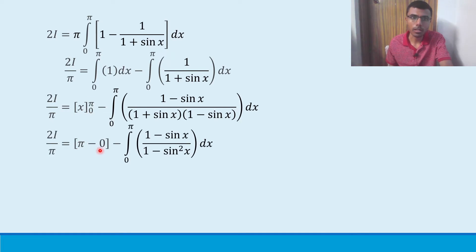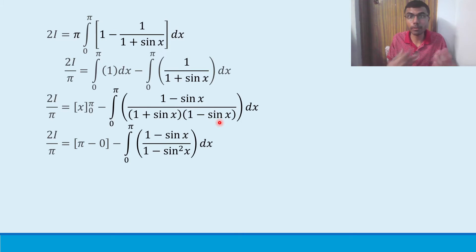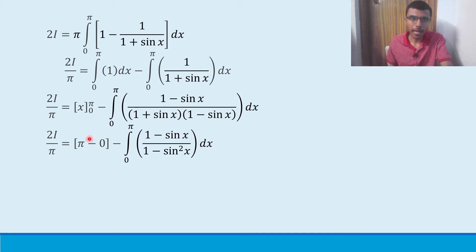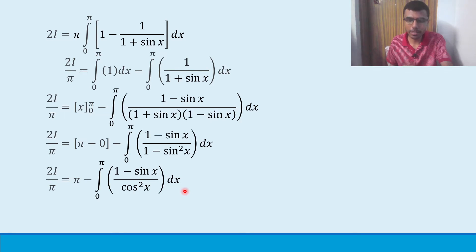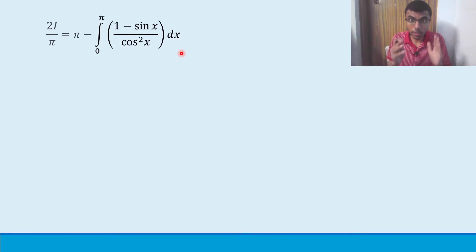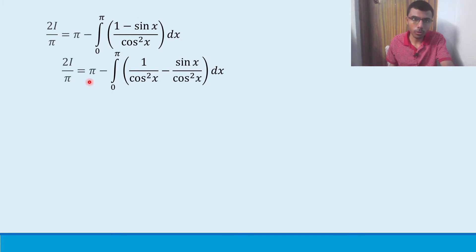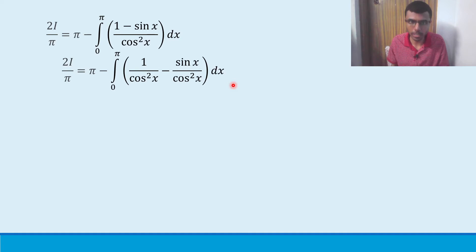Applying limits to the first integral: x from 0 to π gives π - 0 = π. For the second integral, the denominator is cos²(x) since 1 - sin²(x) = cos²(x). So 2I/π = π minus integral from 0 to π of (1 - sin(x)) / cos²(x) dx. Now split this into two terms by distributing cos²(x) to both 1 and sin(x).